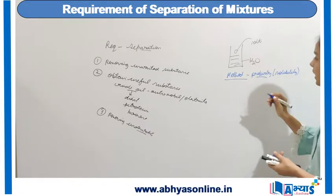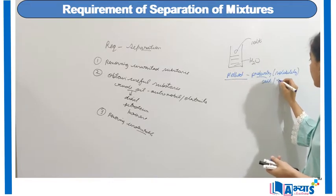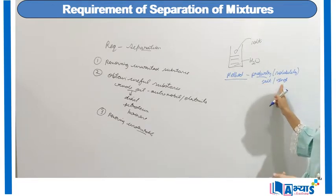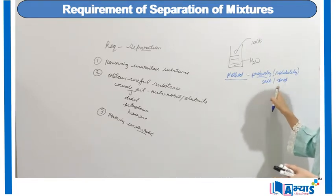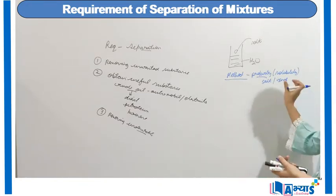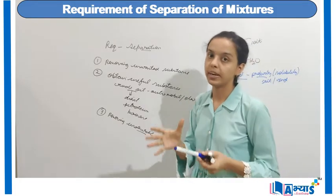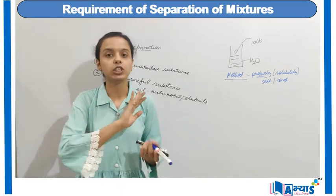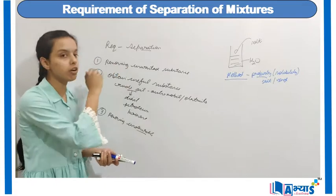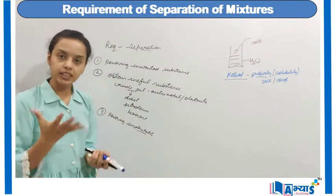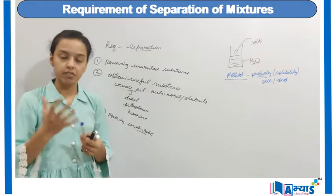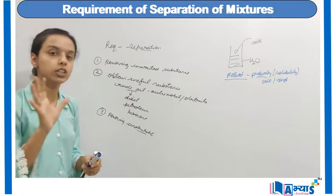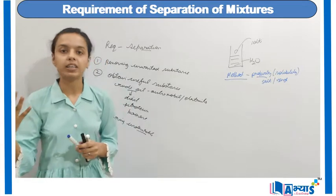If I take the example of salt and sand, you clearly know that salt dissolves in water and sand does not dissolve in water. So to separate sand and salt, we use the property of solubility. When you want to separate two substances, you must use a property that is followed by one substance and not followed by the other. Like in the case of rice and pebbles, we use the property of size, because pebbles are larger and rice is smaller.